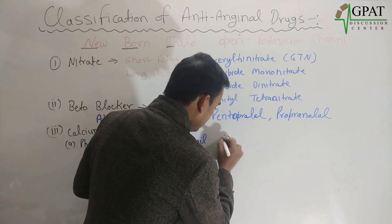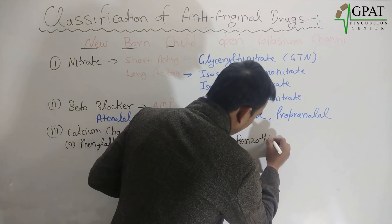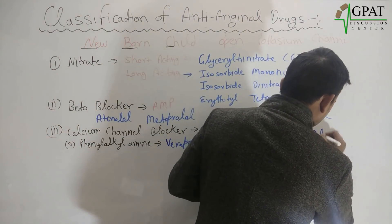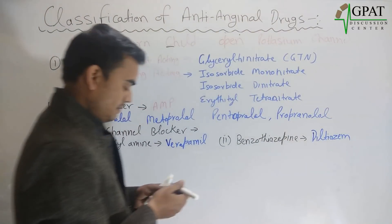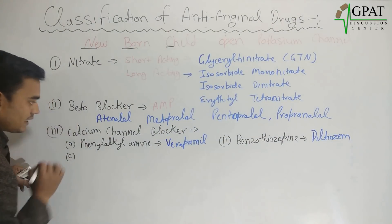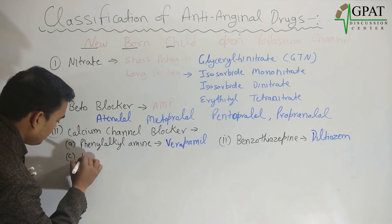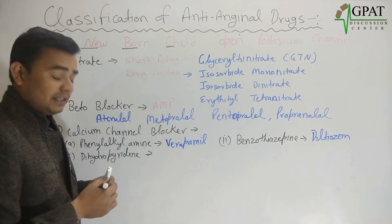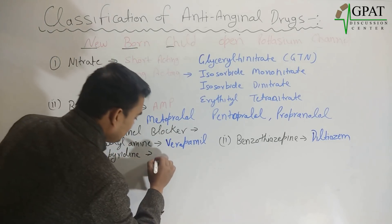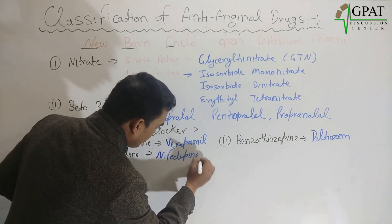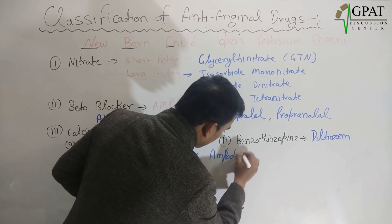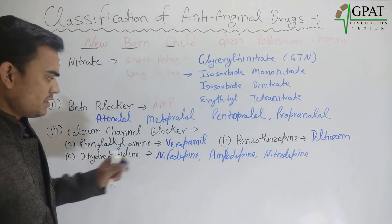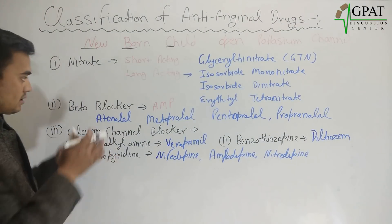The second category is benzothiazepine, and the example of benzothiazepine is diltiazem. The third category of calcium channel blockers is dihydropyridine, and all the '-dipine' drugs come under this class.